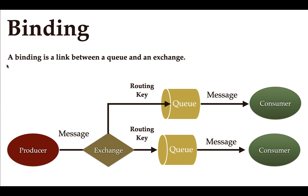Next, what is a binding? A binding is a link between a queue and an exchange. The exchange uses a routing key to route a message to the respective queues, and this comes into picture whenever we have multiple queues in an application. Binding is nothing but a link between queue and exchange, done using the routing key.